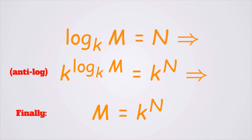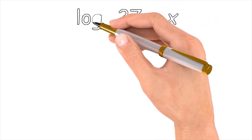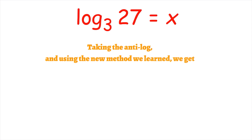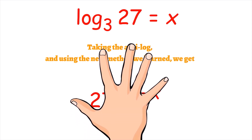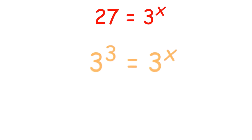A note here: k and m must be greater than zero, and additionally k cannot equal 1. Let's now apply this to the problem at hand. Our problem was log base 3 of 27 is equal to x. If we apply what we learned, we can take the anti-log and get 27 is equal to 3 to the power of x. We can rewrite 27 as 3 to the power of 3, so the exponents have to be equal and x is equal to 3.